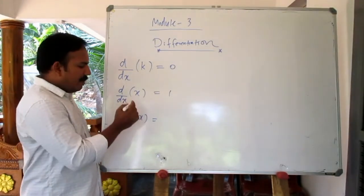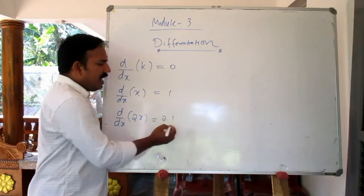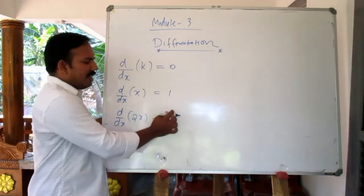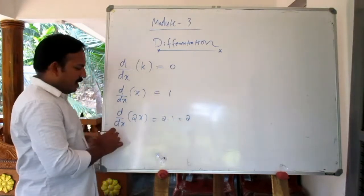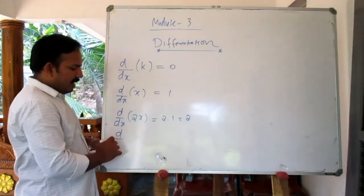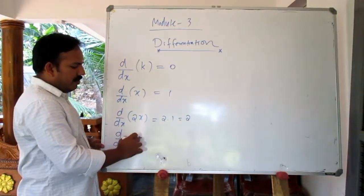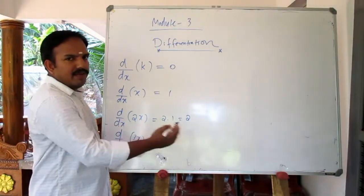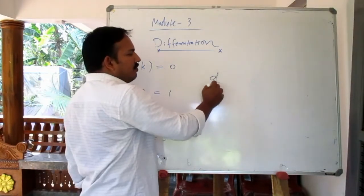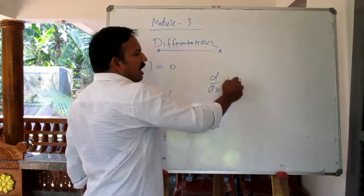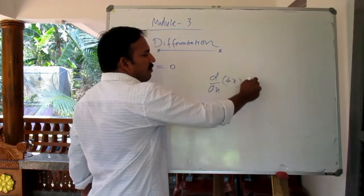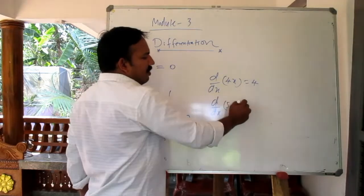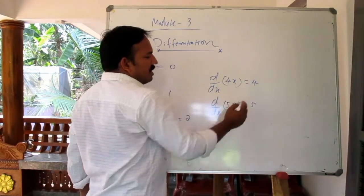The derivative of 2x is 2, because the constant 2 comes out and the derivative of x is 1, giving 2. d by dx of 3x equals 3. d by dx of 4x equals 4. d by dx of 5x equals 5.